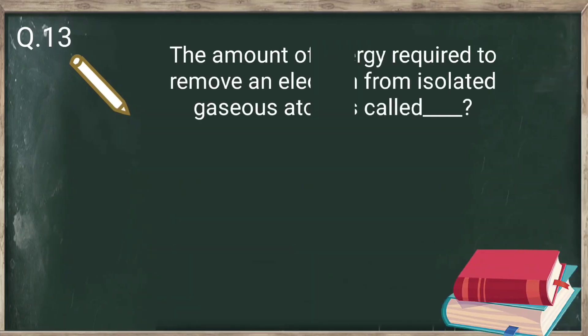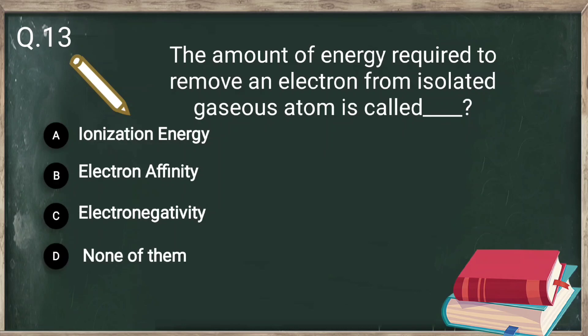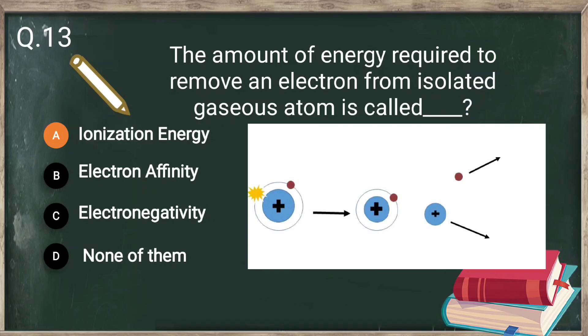Question number 13: the amount of energy required to remove an electron from an isolated gaseous atom is called ionization energy. The energy that is provided to remove an electron from any atom is known as ionization energy.